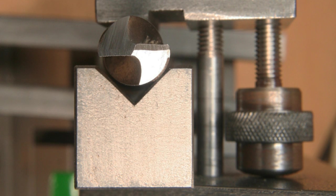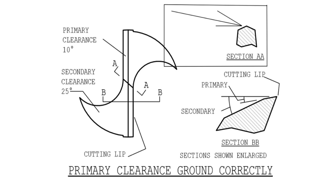An important feature of the four-facet form is that the chisel now has a pointed face rather than the flat chisel of a normal drill. This enables the drill to start without a centre punch mark, but more importantly reduces the load that the normal chisel places on the drilling machine.